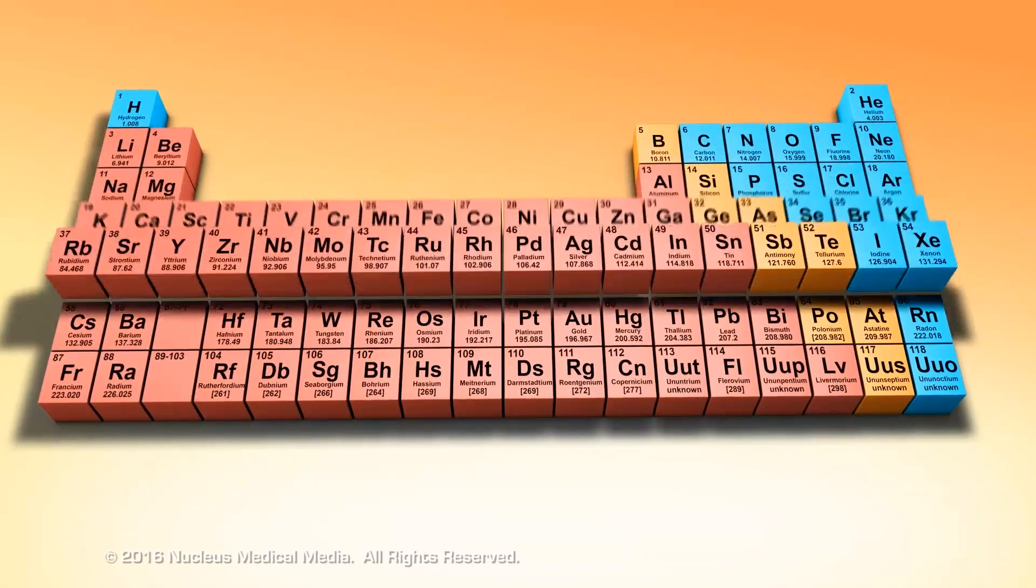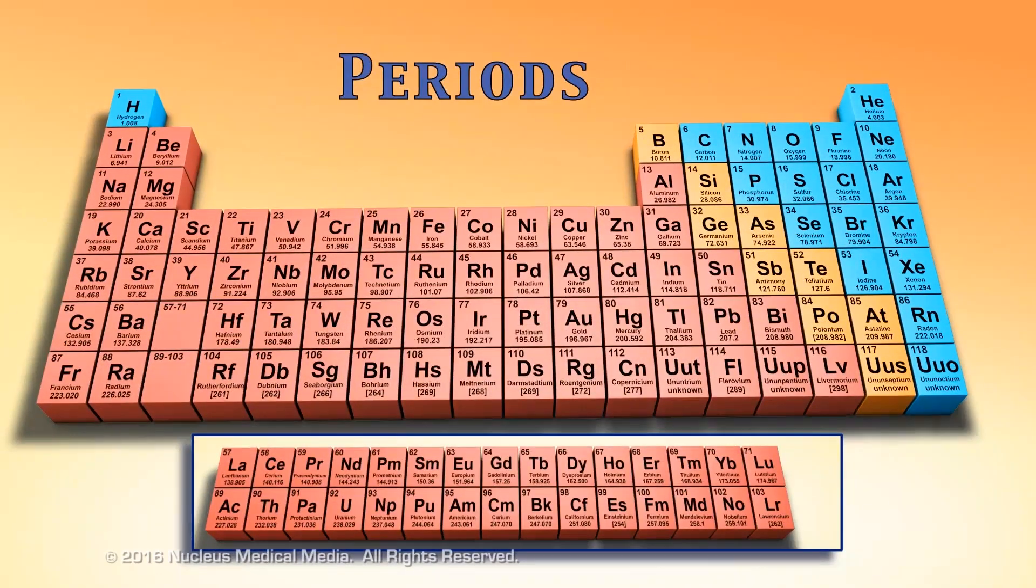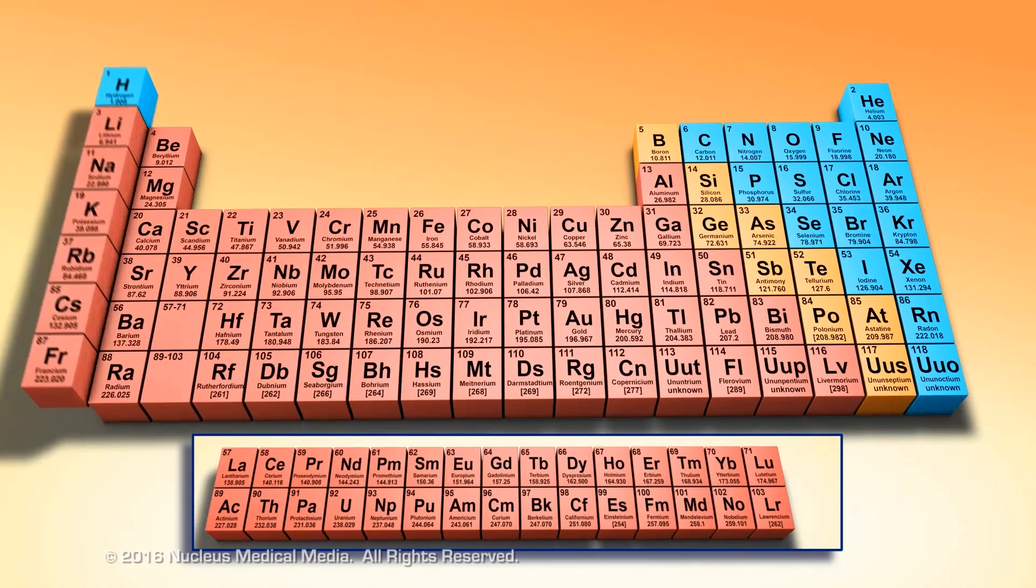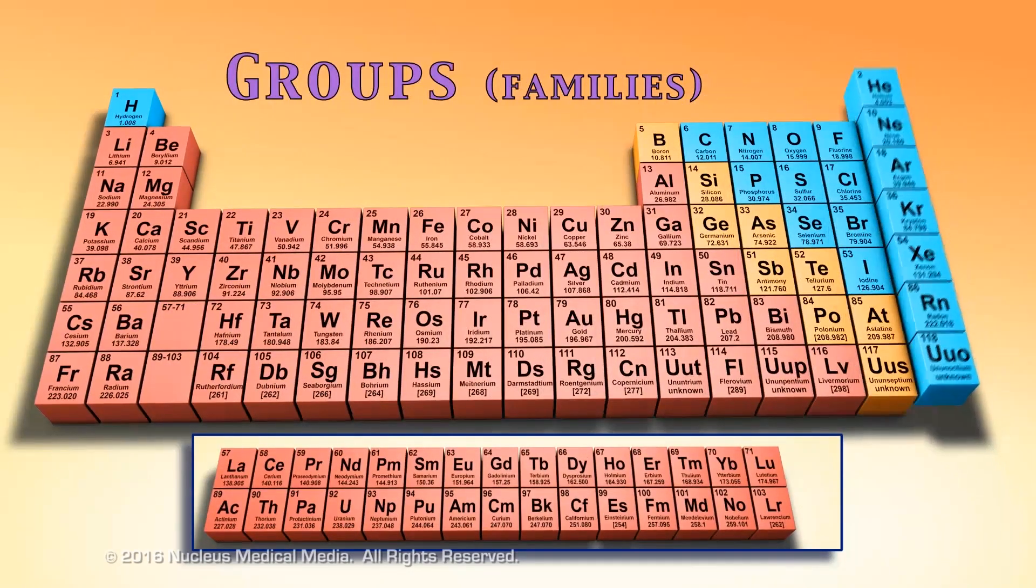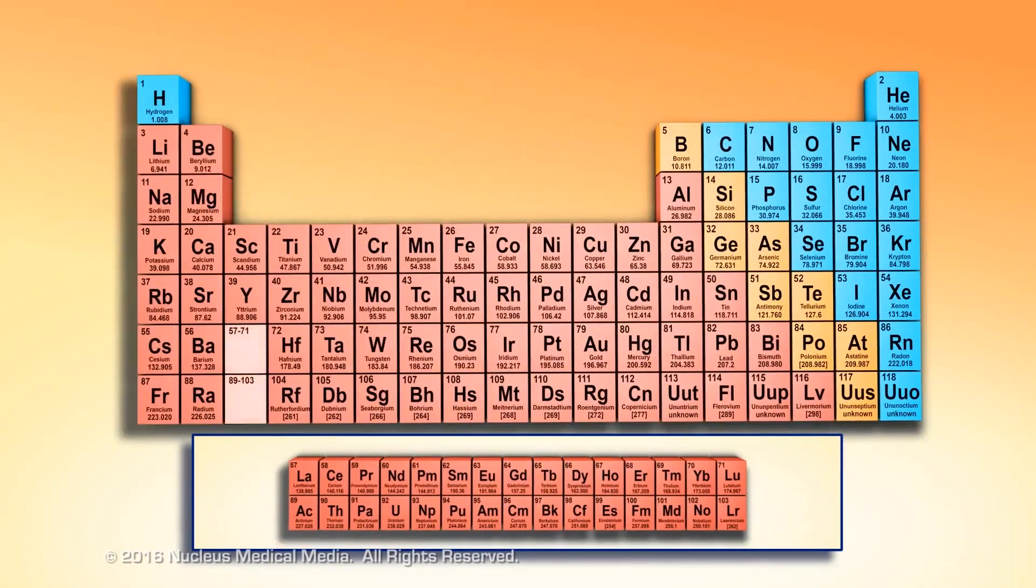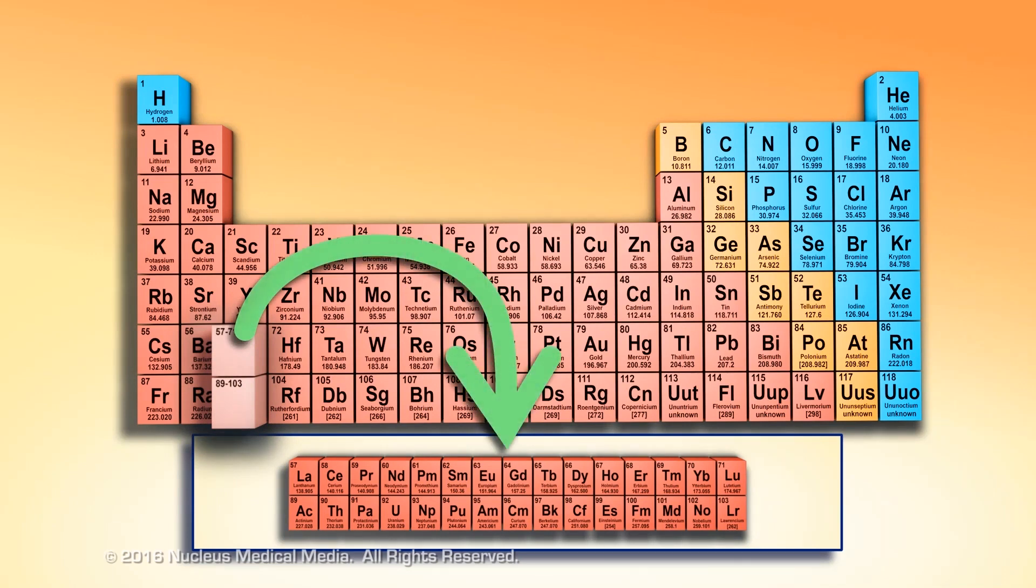Rows in the periodic table are called periods, and columns are called groups or families. A section from each of the two bottom periods has been pulled out and placed below the table to avoid making the table too wide.